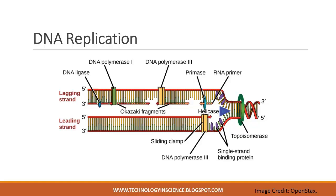The replication fork moves at a rate of around 1000 nucleotides per second. DNA polymerase can only extend in the 5' to 3' direction, which poses a slight problem at the replication fork. Since the DNA double helix is anti-parallel — one strand runs 5' to 3' and the other 3' to 5' — one strand complementary to the 3' to 5' parental DNA is synthesized continuously toward the replication fork. This continuously synthesized strand is known as the leading strand.